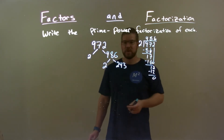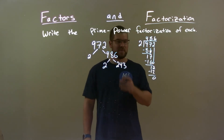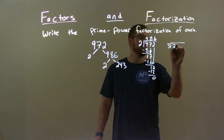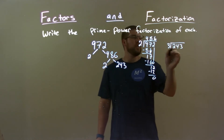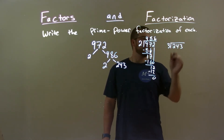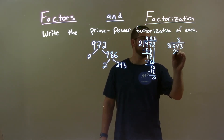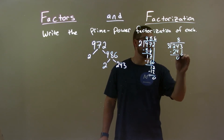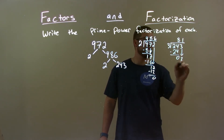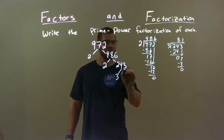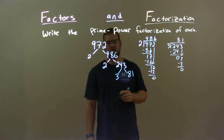Now 243 is not divisible by two, but it's probably divisible by three. Let's check that out. Three goes into 24 eight times — eight times three is 24. Subtract it, get zero, bring down the three. Three into three is one, one times three is three, subtract it, get zero. We have 81. So three times 81 gives us 243.